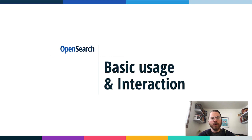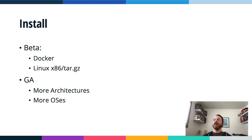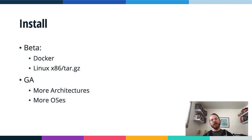Let's talk about basic usage and interaction. This is beta-level software, with betas released as Docker images and as a tarball for Linux on x86 architecture. As we move to GA, more architectures and operating systems will be available. The choice to limit to Docker and Linux for beta lets us limit the surface area we need to build for. Release candidate and GA will introduce more architectures and OSes.